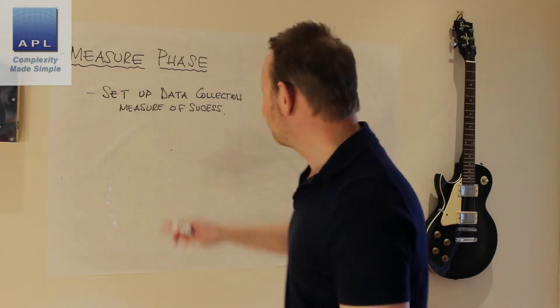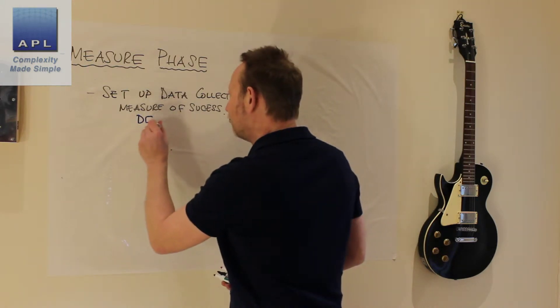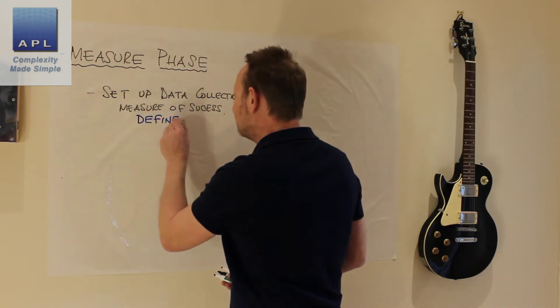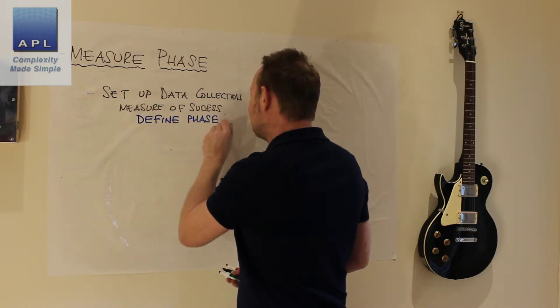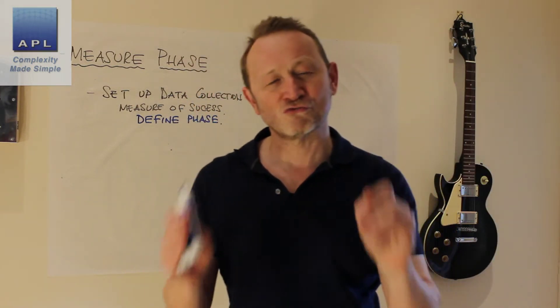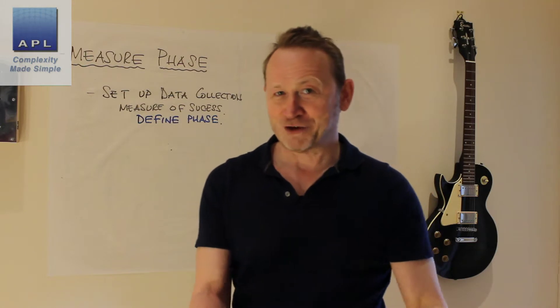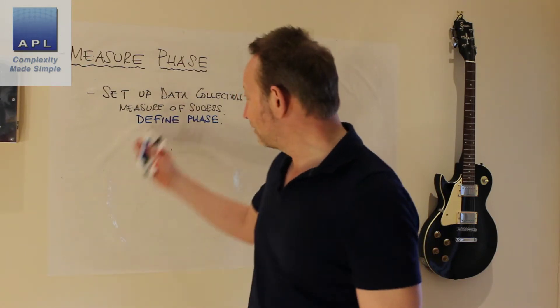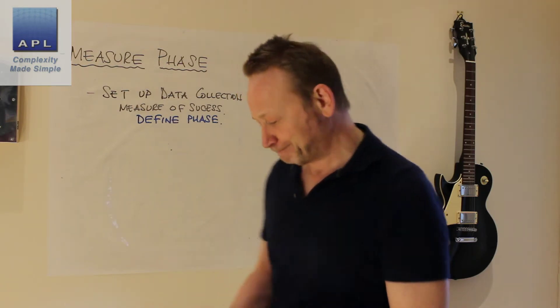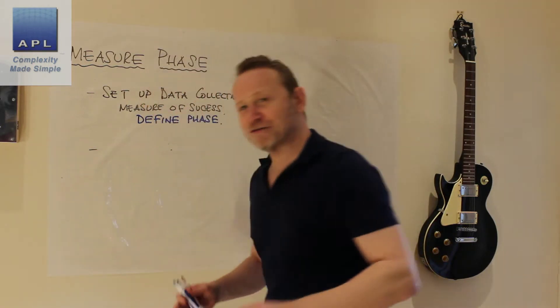It could be that it's not something you currently look for, so you have to set a measure up and then decide how much of a problem it is. Really, this would have been done in the Define phase — which brings me back to the point that Define, Measure, Analyze, Improve, Control isn't really linear, because you have to measure before you can define.